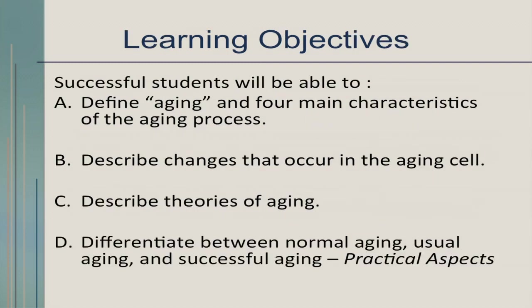The learning objectives are as follows. Today I will be defining aging and four main characteristics of the aging process. I'll describe changes that occur in the aging cell, describe the theories of aging, and differentiate between normal aging, usual aging, and successful aging. But in that part of the talk, which is about the second half, I will be focusing on the very practical aspects of caring for older patients.